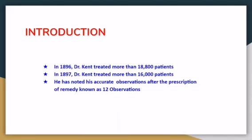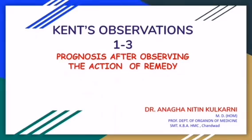These observations are nothing but Dr. Cain's meticulous notes while treating so many patients. He included them under the title of Cain's 12 observations, namely prognosis after observing the action of remedy.